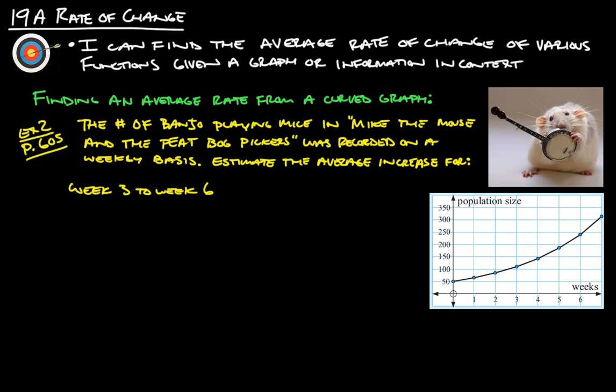We've got week three is right here and week six is right here. So what we want to do is basically find the slope of the line that connects those two points. That's fairly straight-ish. So we want to find the average rate, which is just the slope or the gradient.